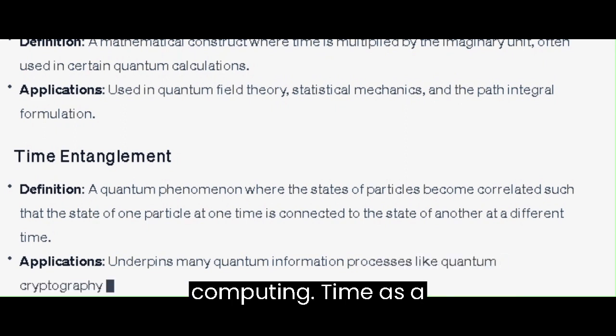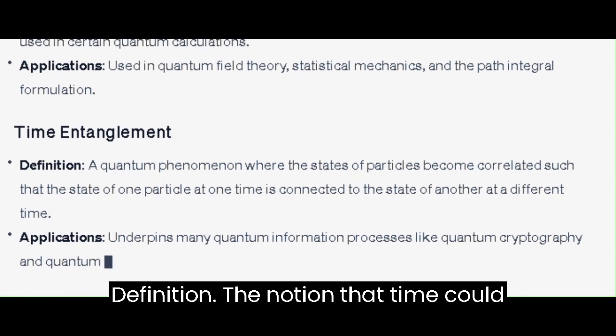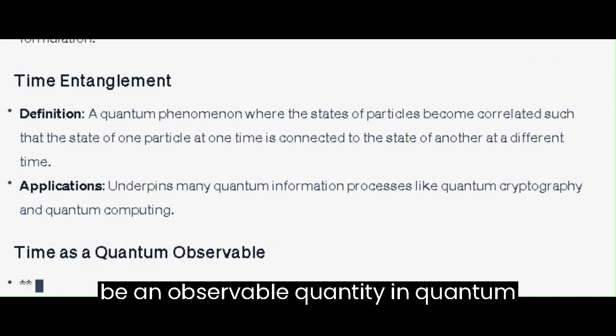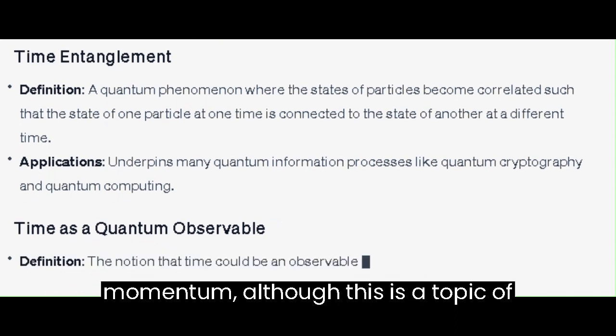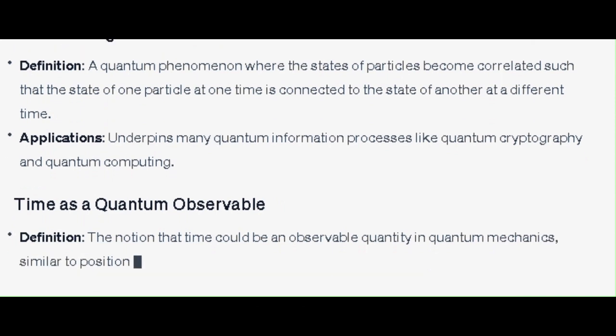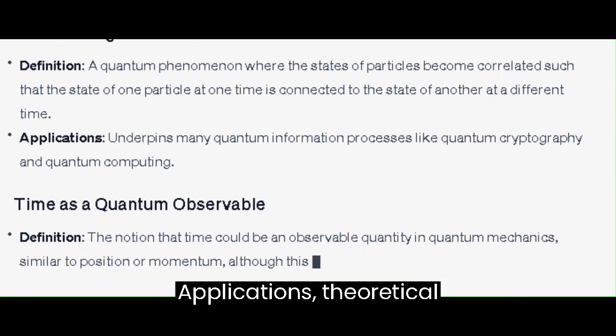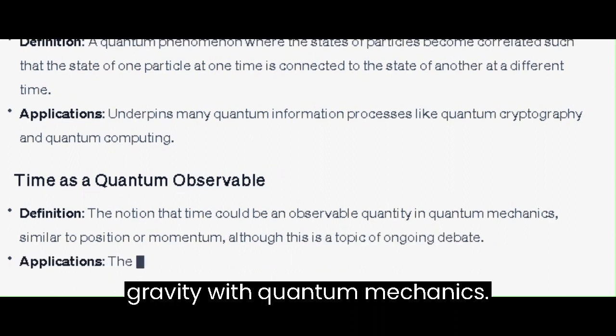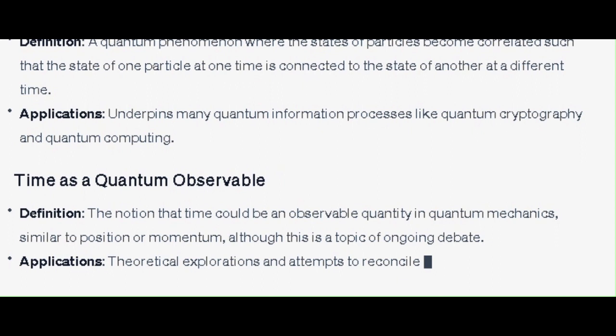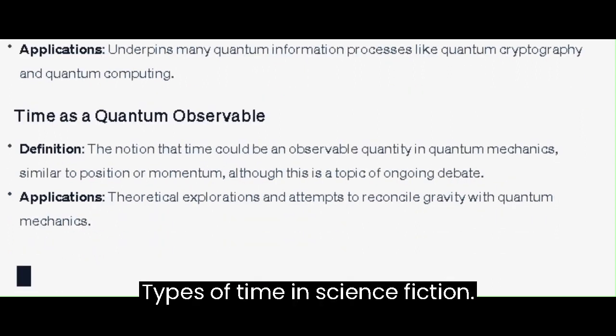Time as a quantum observable - the notion that time could be an observable quantity in quantum mechanics, similar to position or momentum, although this is a topic of ongoing debate. Applications: theoretical explorations and attempts to reconcile gravity with quantum mechanics. Types of time in science fiction: